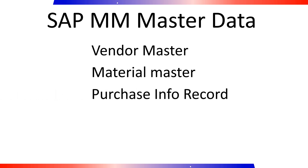In SAP Materials Management (MM), a purchase info record is a record that contains purchasing-related information about a specific material and a specific vendor. It serves as a source of data for procurement processes and helps in ensuring consistency and efficiency in purchasing transactions.